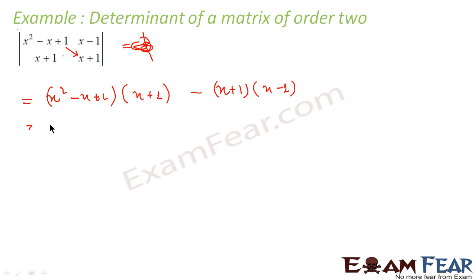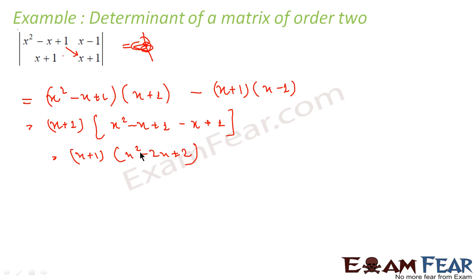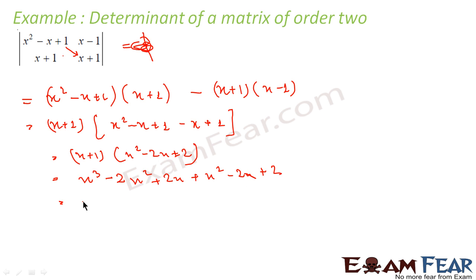Factoring out (x+1) common, we get (x+1)·[(x²−x+1) − (x−1)] = (x+1)·(x²−2x+2). Expanding: x·(x²−2x+2) + 1·(x²−2x+2) = x³−2x²+2x + x²−2x+2. Combining like terms: x³ − x² + 2. That is the determinant of this matrix.